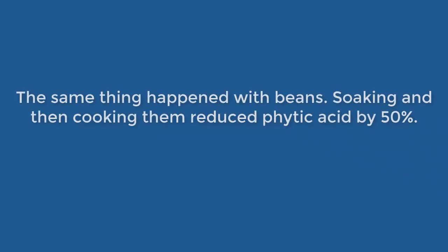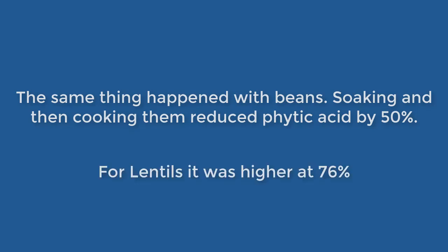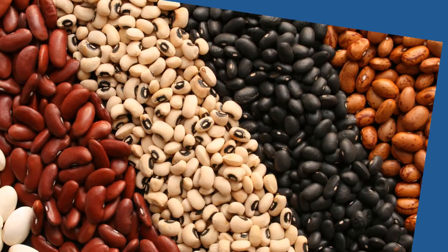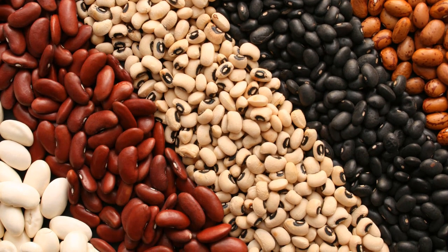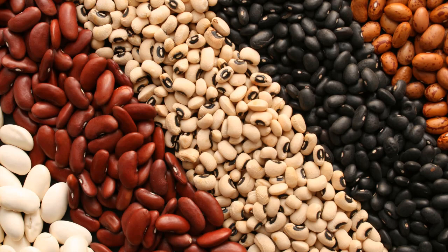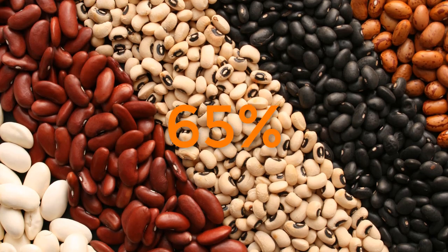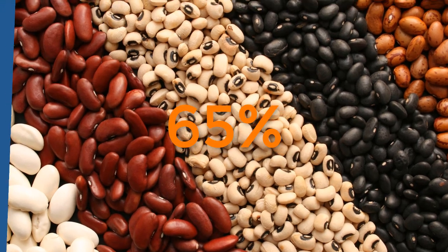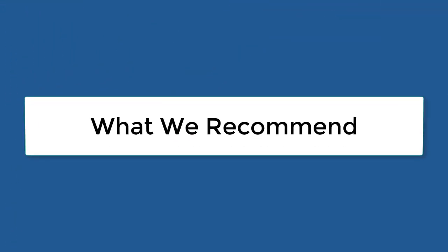Soaking and then cooking beans reduced phytic acid by 50%. For lentils it was higher, at 76%. Another interesting report showed that storing beans in humid and warm conditions reduced phytic acid by 65%.